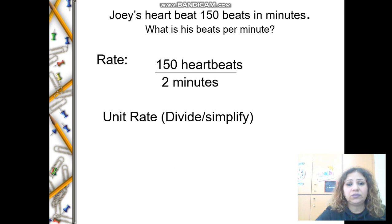First, write the ratio which is 150 to 2. As you see here, it's a ratio that compares two quantities that have different units—heartbeats and minutes. I'm writing the ratio as a fraction. Then find the unit rate using division or simplification. How are you going to change two to one?